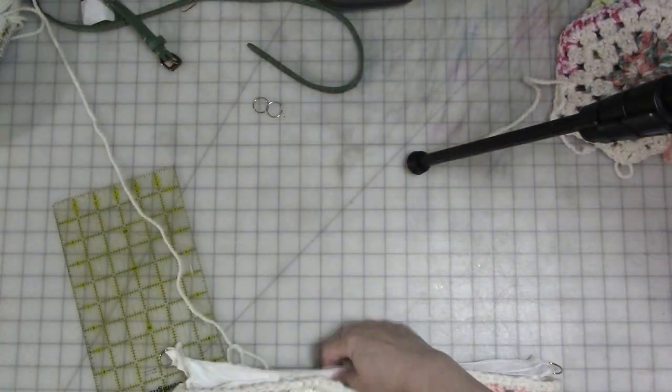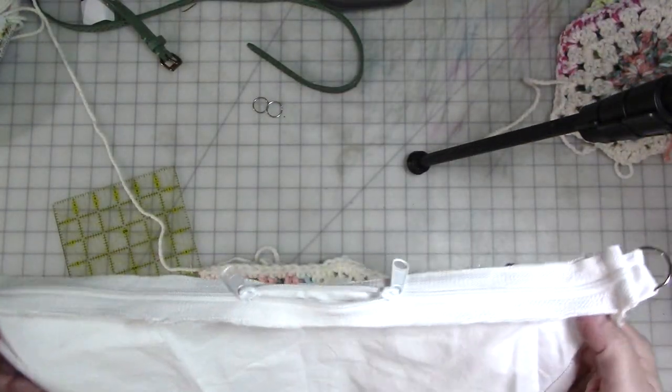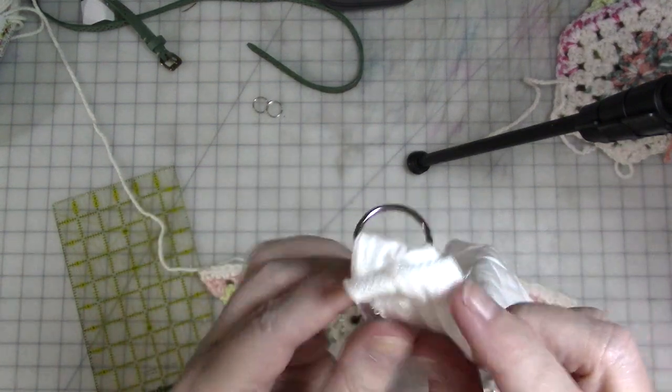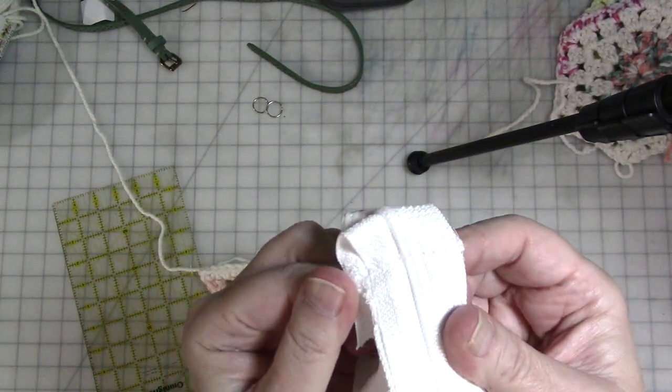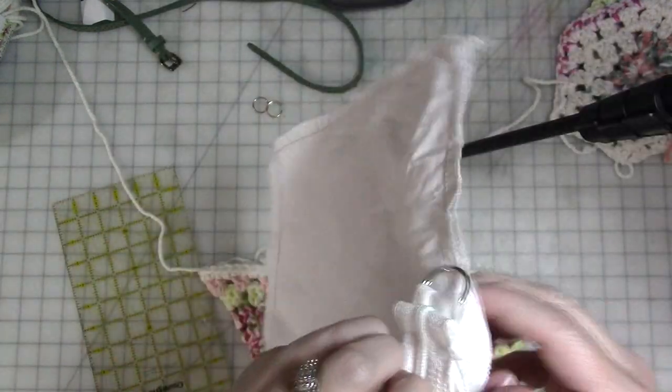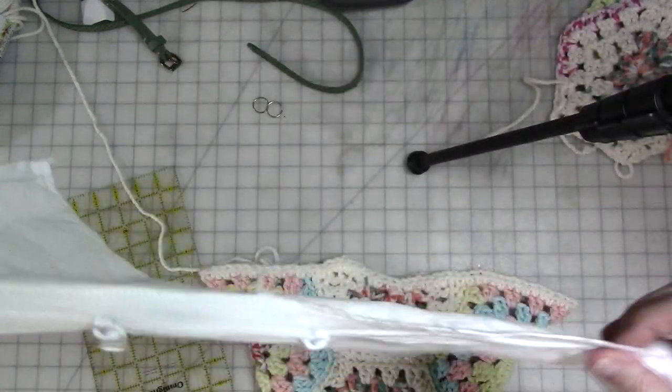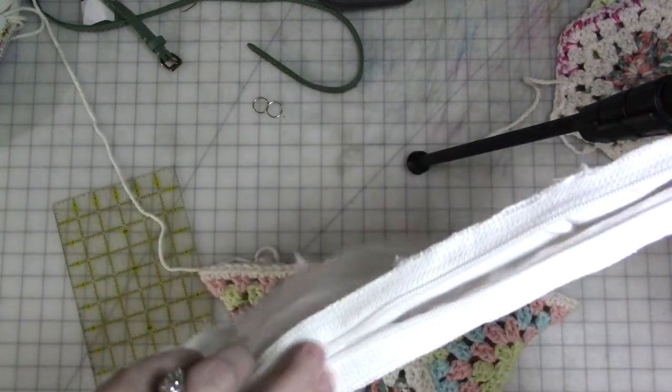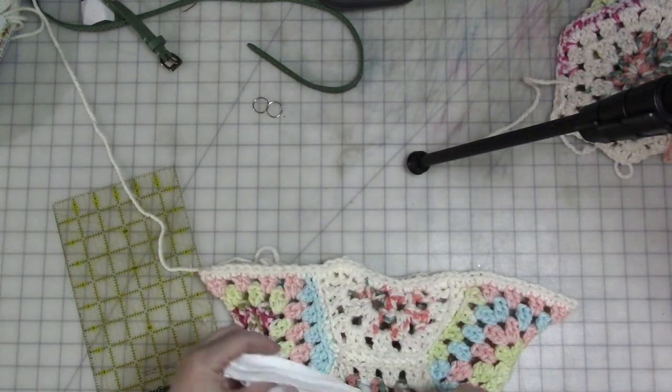The lining is all sewn together. I folded the zipper tape under and stitched these d-rings. It's not the neatest job on the planet but it's not going to show when all is said and done. I used some zipper tape that I had so that I could put a double zipper on it.